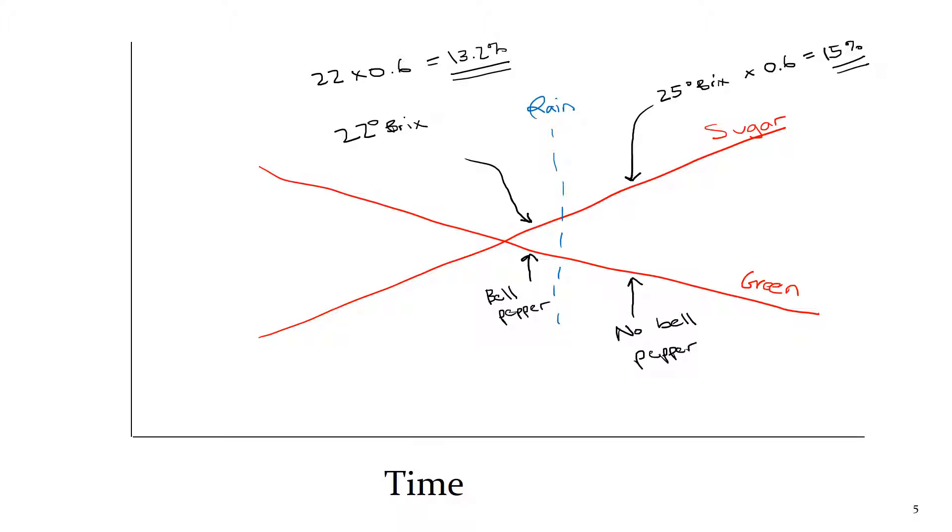So this is just an example of how a winemaker might make decisions at harvest. Rain in 2011 complicated the picture. If you picked before, you had lower alcohol levels and some green flavor, but you didn't risk your grapes molding because of the rain. If you picked after, hopefully your grapes didn't mold. Your brix was higher. You had a higher alcohol percent and possibly no bell pepper flavor. So that's typical of how harvest decisions are made.